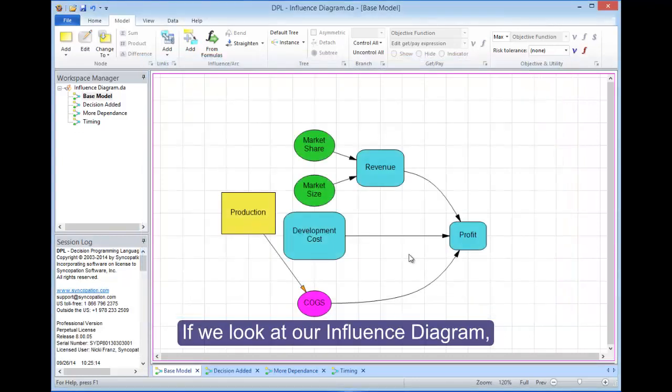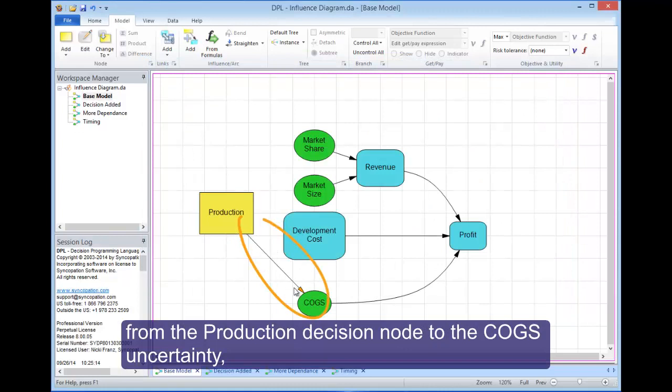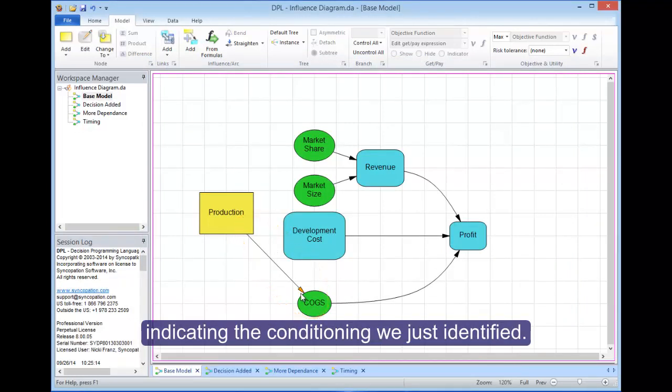If we look at our influence diagram, you'll notice that DPL has added an arrow from the production decision node to the COGS uncertainty, indicating the conditioning we just identified.